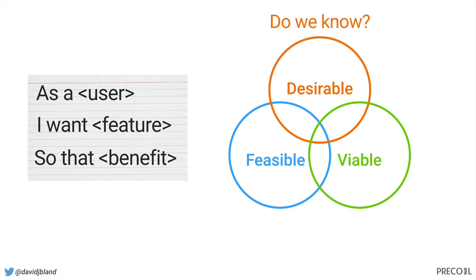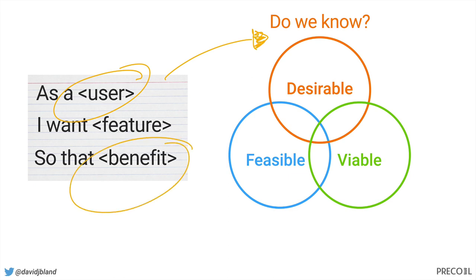For example, this idea of desirability — do we know? Is it desirable? A lot of that ends up being around the user. Do we have any data that says this is the user or customer we should focus on? It may also come back to the benefit they're looking for — is there a job pain and gain you're solving for? And is this backed by evidence? If you're wrong there, it's really hard to recover no matter how well you build it.